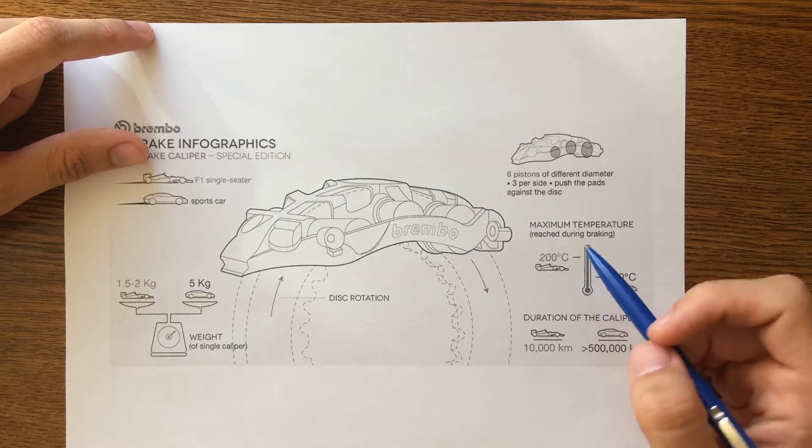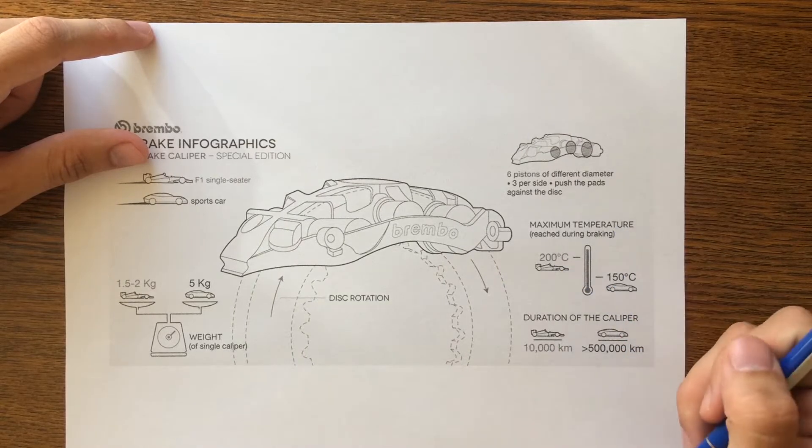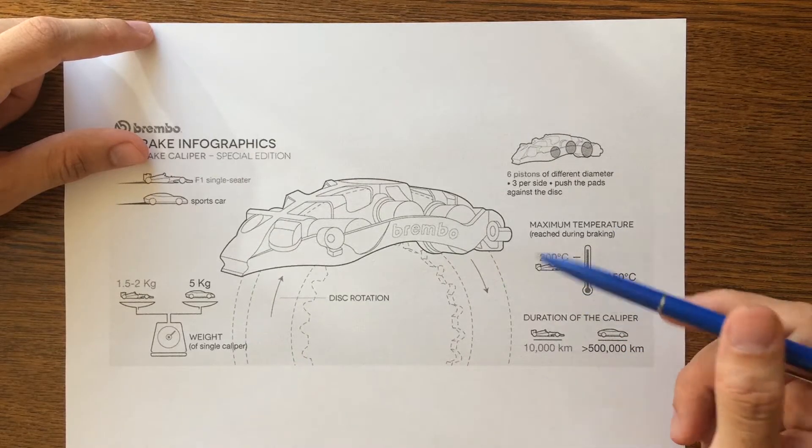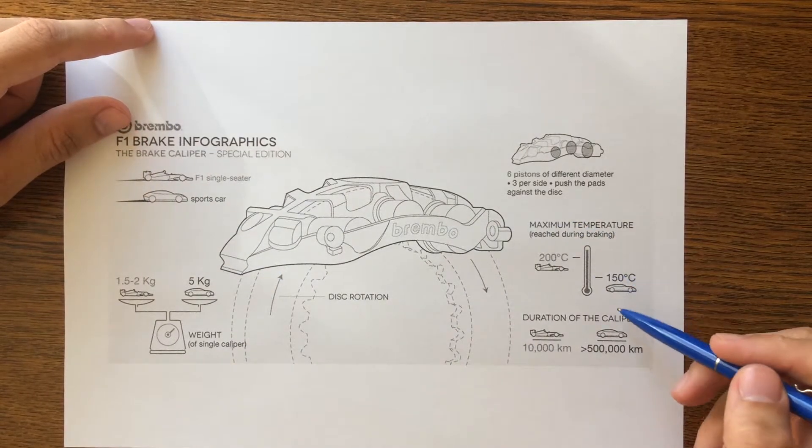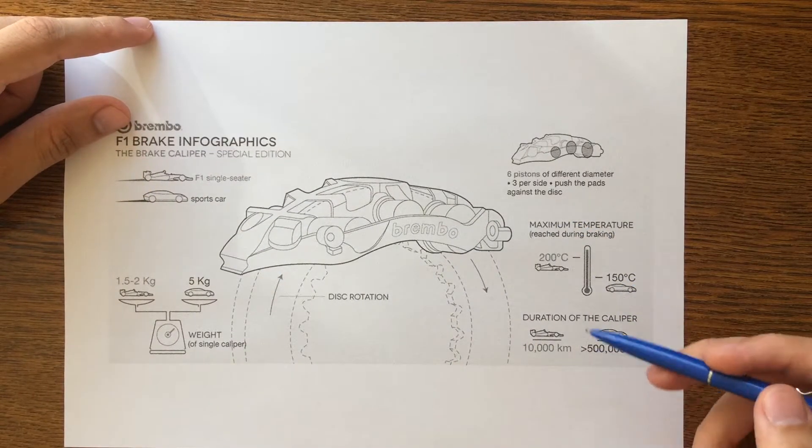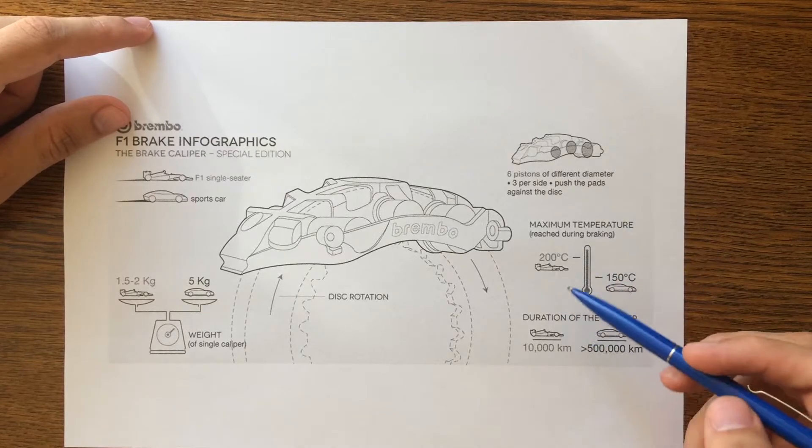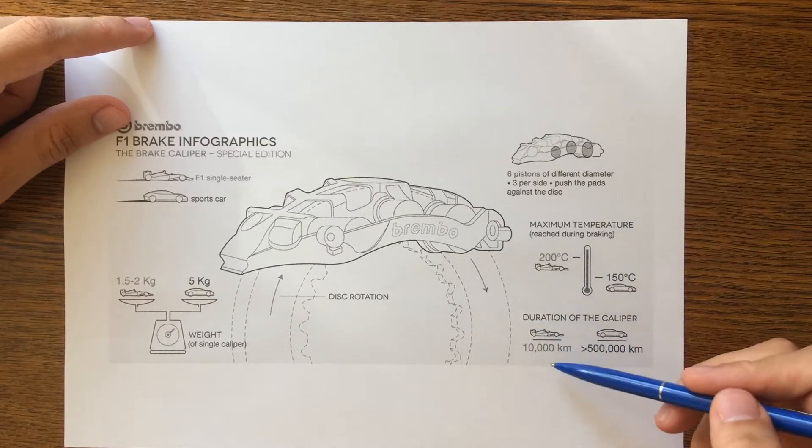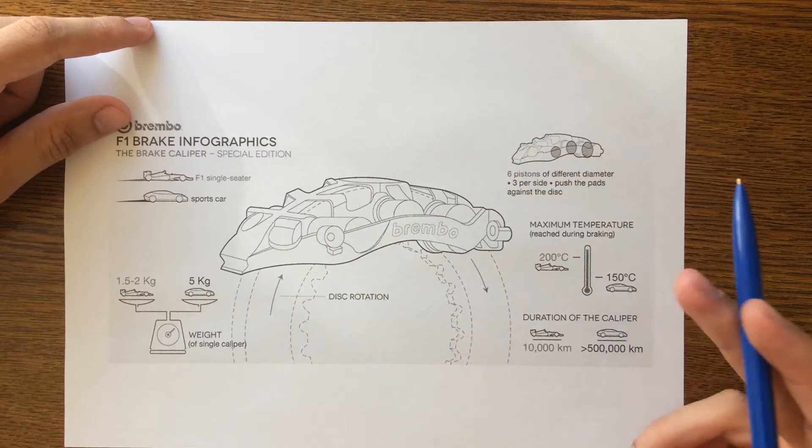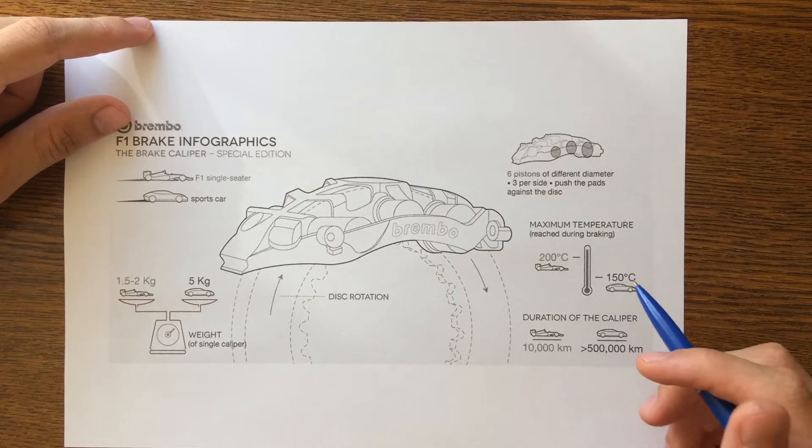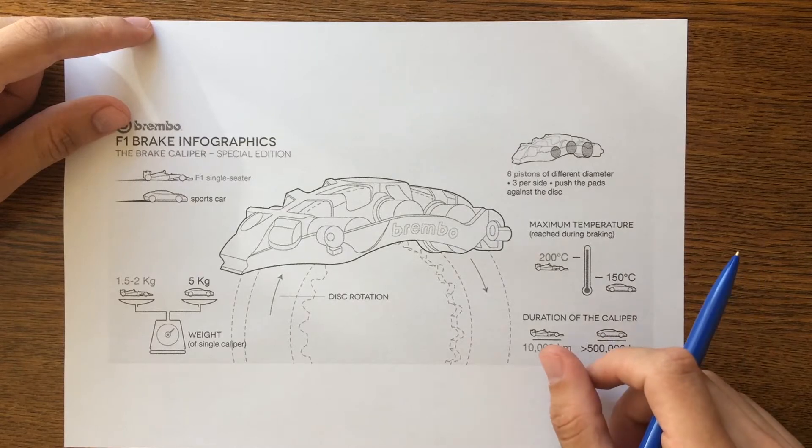The maximum temperature reached by the caliper is 200 degrees Celsius, and on a sports car can go up to 150. At the same time, it's capable of reaching 10,000 kilometers in duration. During a complete season, Brembo is providing 10 sets of calipers for each team.